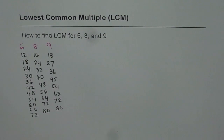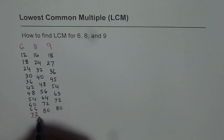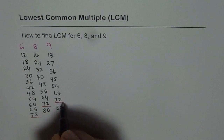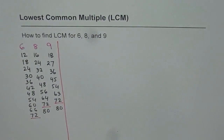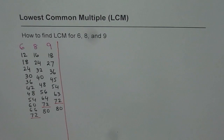Now we already have a number which is common to all, which is 72. So finding all the multiples can help you find the least common multiple. But that may take a long time. So that is one method — we did get the answer. The other method is prime factorization.